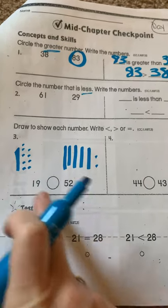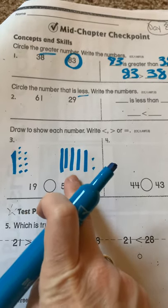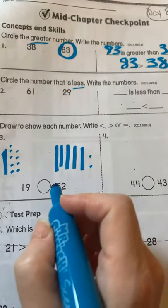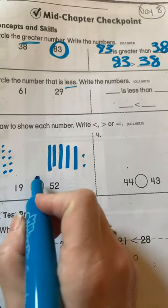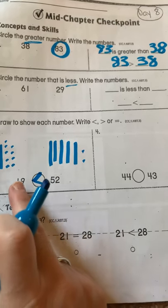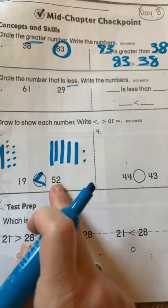We have one for 19, and we have one, two, three, four, five for 52. So we're going to say that 19 is less than 52. See, my L? 19 is less than 52.